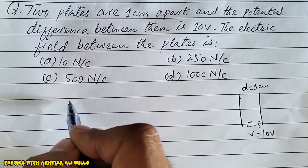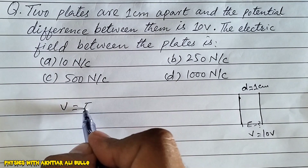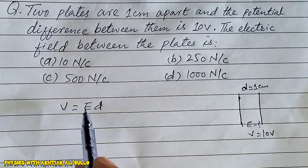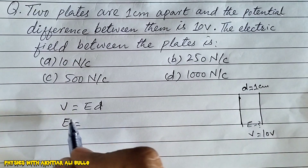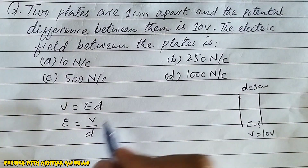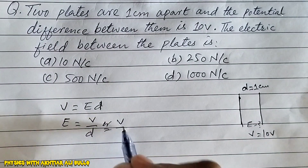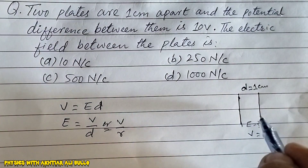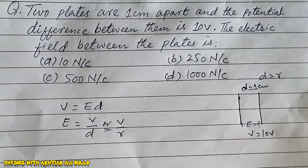The electric potential V is equal to E into d. So we have to find the electric field E, which will be equal to V upon d. We can also write it as V upon R, meaning here D is equal to R.